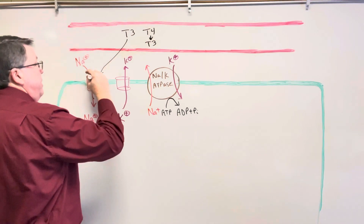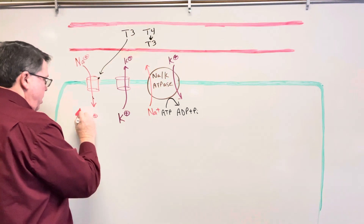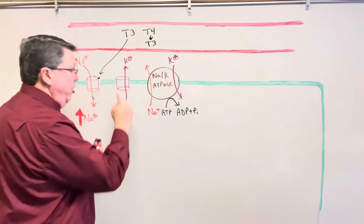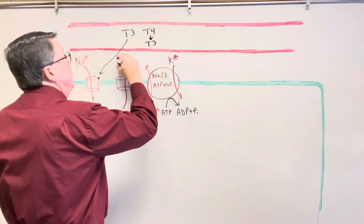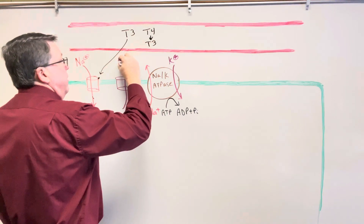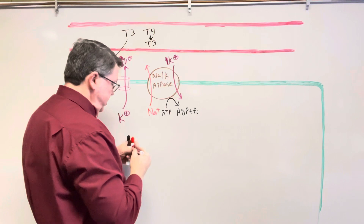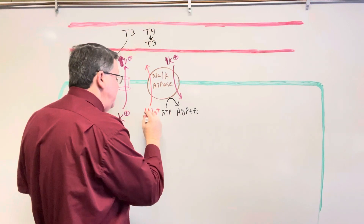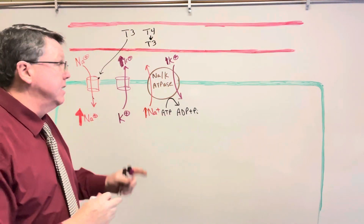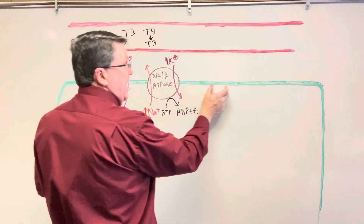One thing thyroid hormone is going to do is make the membrane more leaky to sodium. So it's going to increase the amount of sodium that comes into the cell, and if I increase the amount of sodium coming in, that means I'm also going to increase the amount of potassium leaving the cell. Because I have more potassium and more sodium, my sodium-potassium ATPase has to work harder, which is going to require more ATP. The other thing this is going to do is increase the number of ion channels on the membrane.